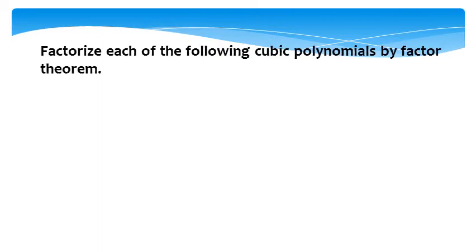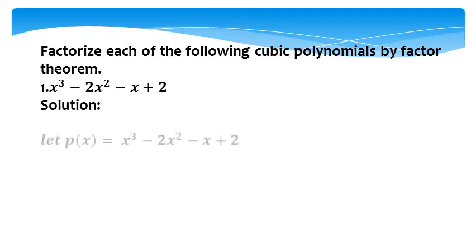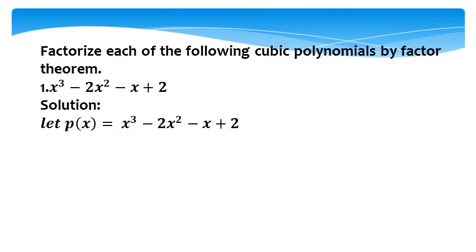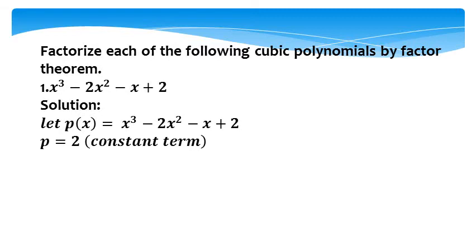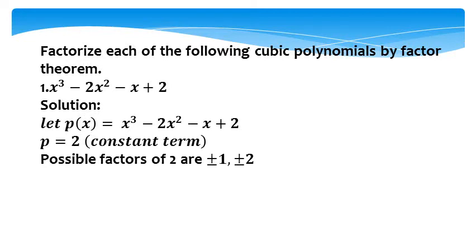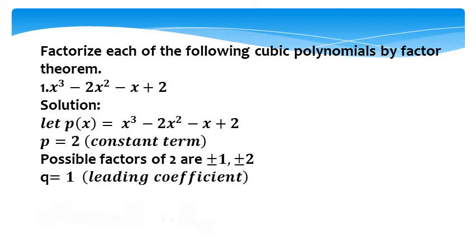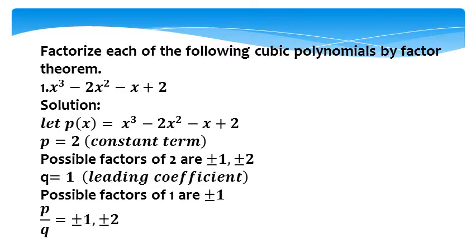Factorize the following cubic polynomial by the factor theorem: x³ minus 2x² minus x plus 2. In the solution, let p(x) equal x³ minus 2x² minus x plus 2. Here, 2 is the constant term, represented by p. Possible factors of 2 are plus or minus 1 and plus or minus 2. q equals 1, the leading coefficient, meaning the coefficient of x³ is 1. Possible factors of 1 are plus or minus 1. Now, p divided by q equals plus or minus 1 and plus or minus 2.